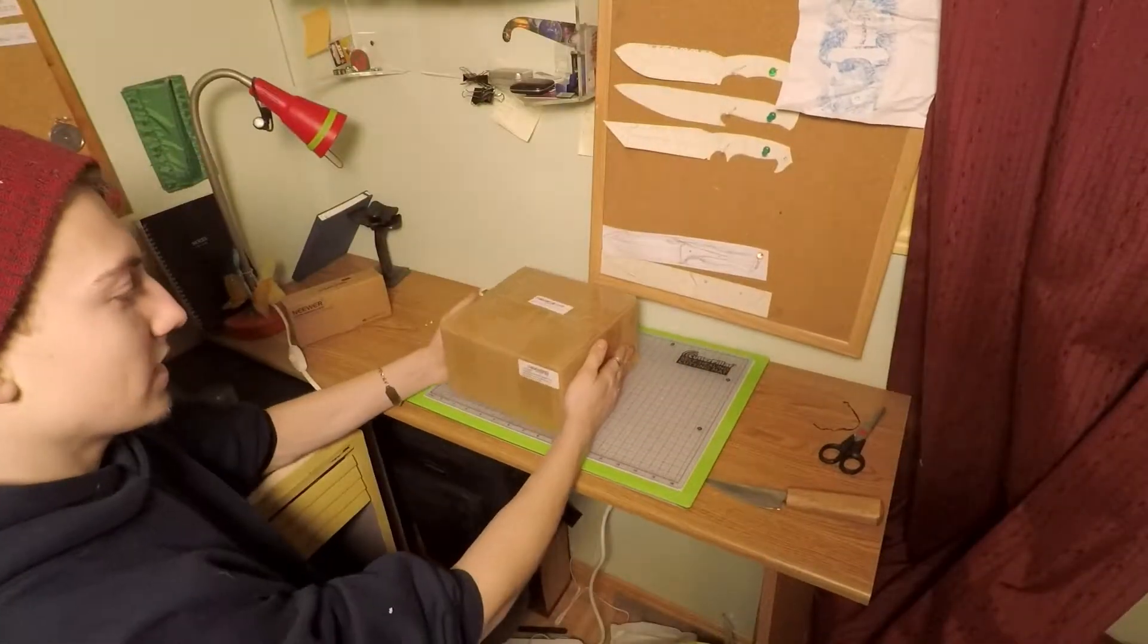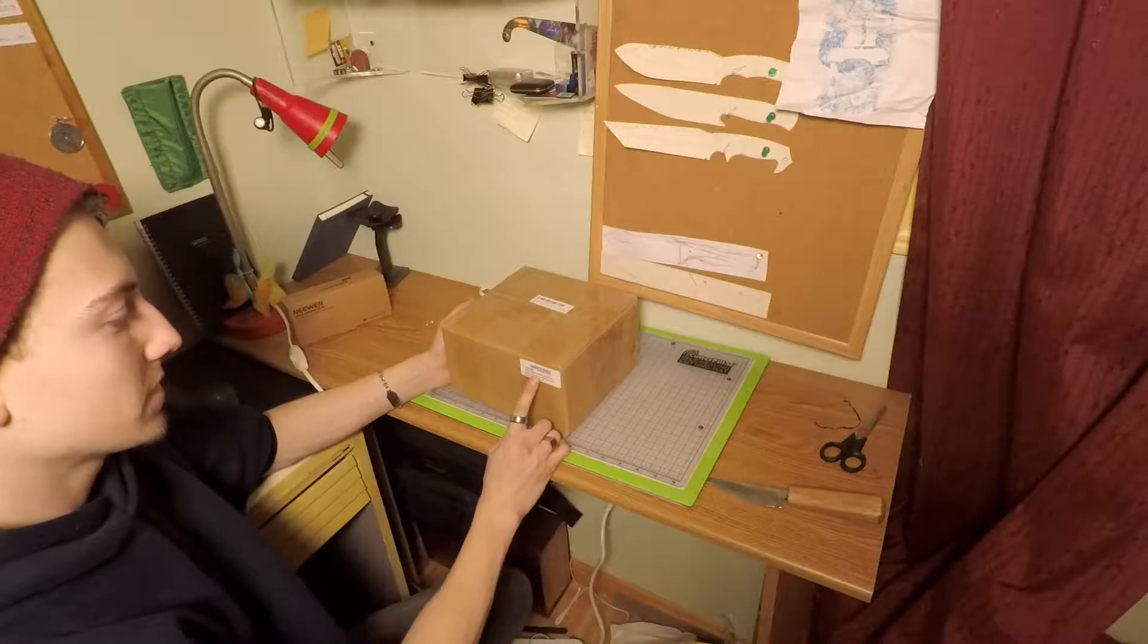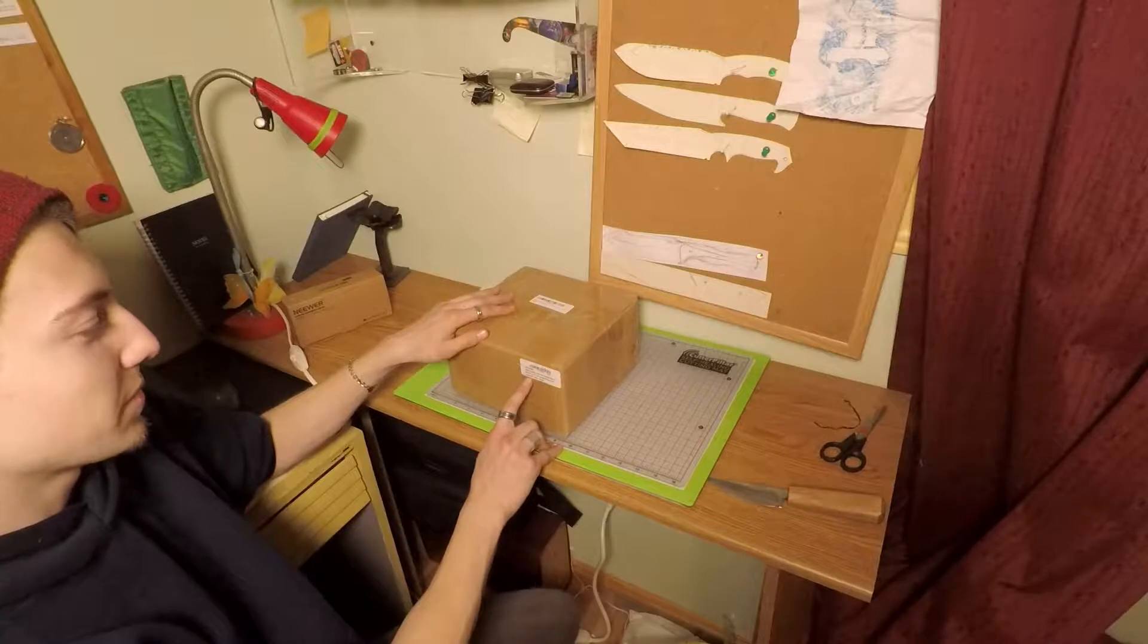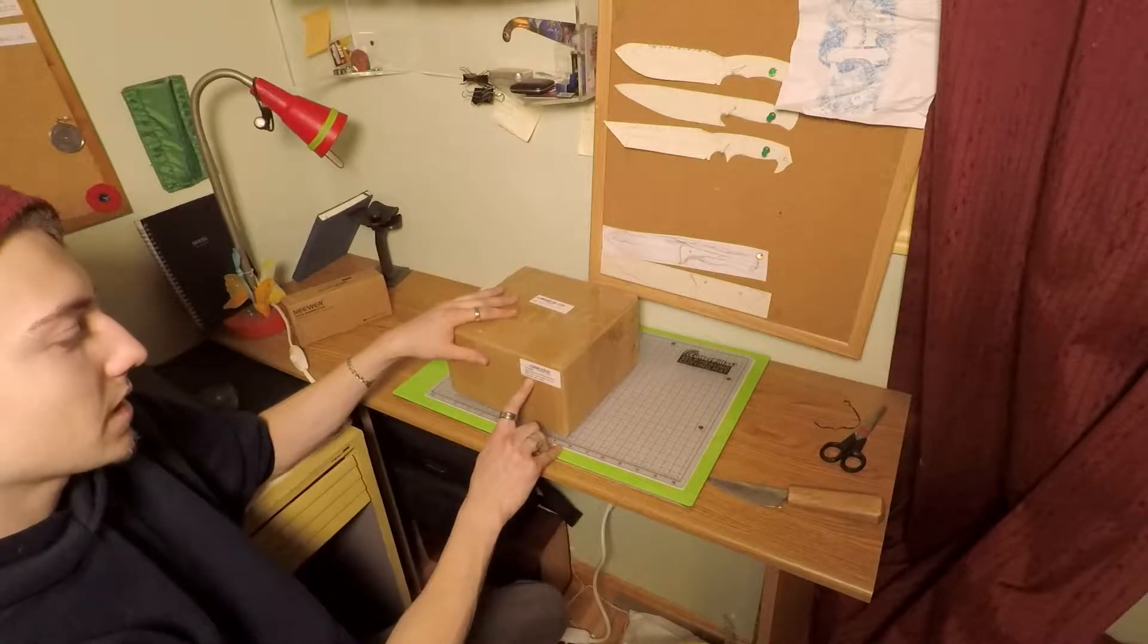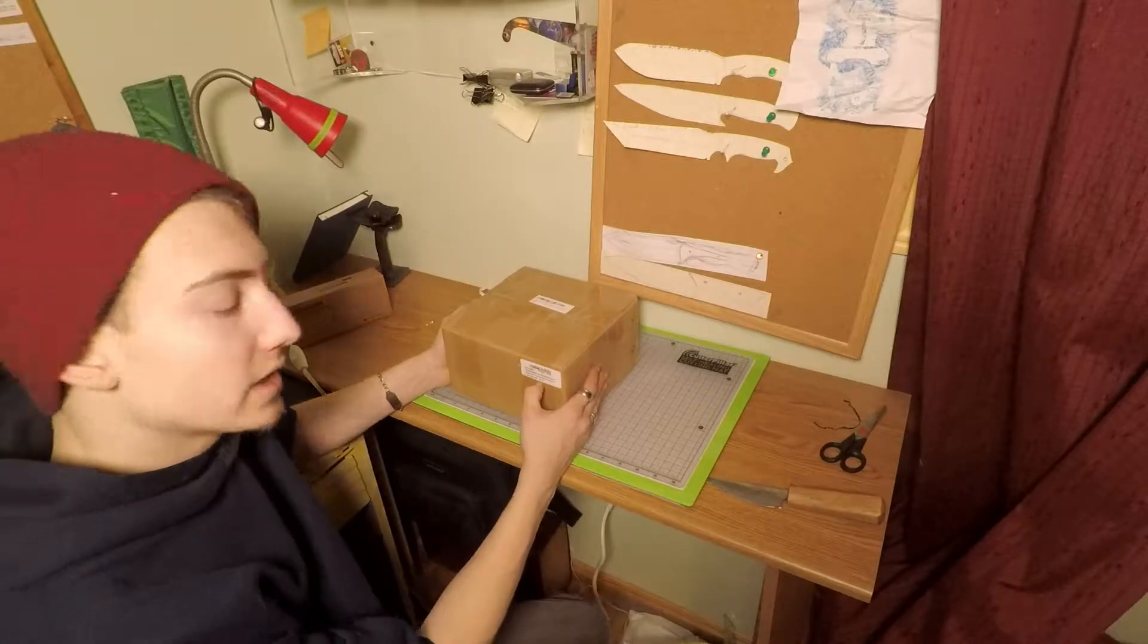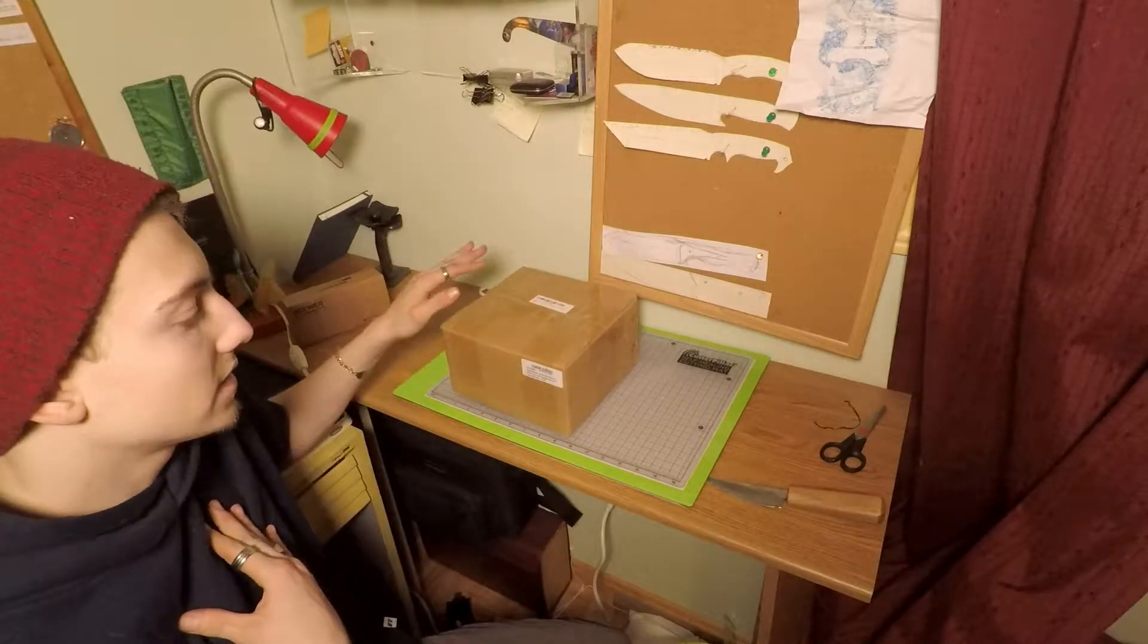So this is an Accu-Size quick change tool post. It is a USA style piston type. This is a number 200 type. It's six pieces. This is for a 10 to 15 inch swing lathe. My Logan lathe is a 10 inch swing.